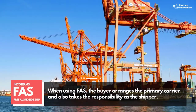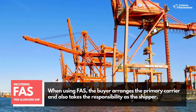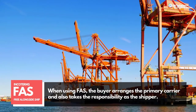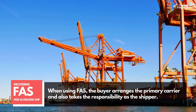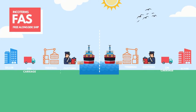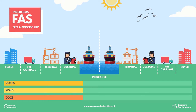When using FAS (Free Alongside Ship), the buyer arranges the primary carrier and also takes responsibility as the shipper. Once items dock the ship, the seller delivers the shipment to the buyer, and the risk transfers from the seller to the buyer. Following this point, the buyer is solely liable for all insurance expenses.